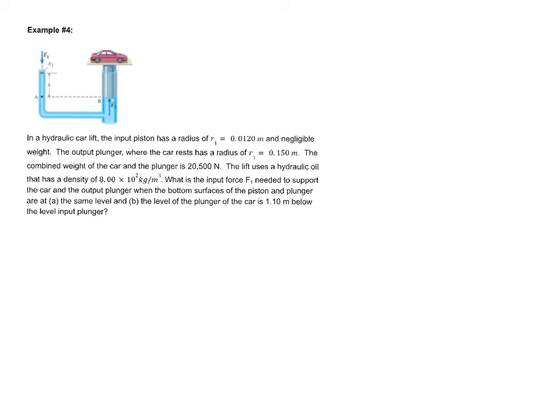But the important things are that we have a radius up here, the smaller one, that the radius of this is 0.012 meters. And then it tells us that the radius of this larger plunger right here is 0.150 meters. And it tells us that the weight of the car plus the plunger over here is 20,500 newtons. And it tells us that the density of the lift fluid is 8.00 times 10 to the second kilograms per meter cubed. Nice density there.